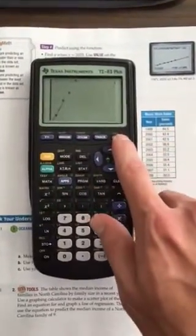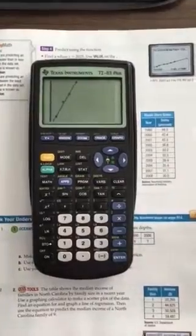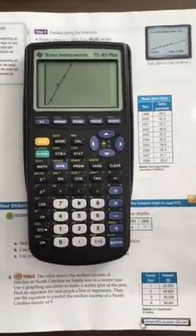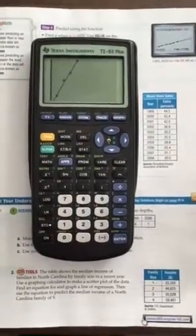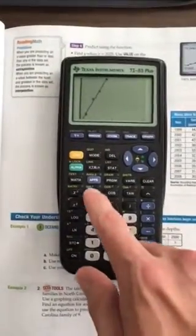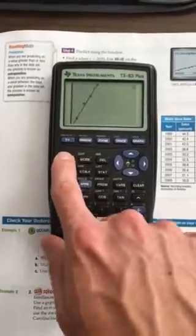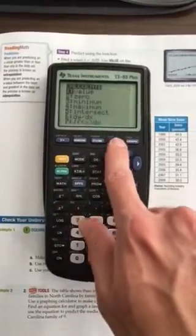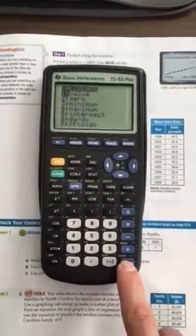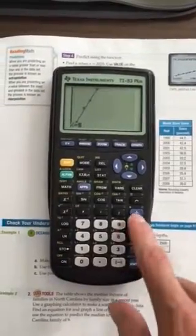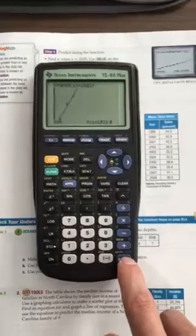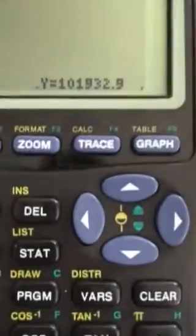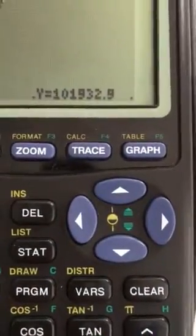Now we should be able to graph. It looks good. And all we need to do is calculate what the median income would be if the family number was 9. So we'll use calculate here, so second calculate. We want to calculate a value, so hit enter, and then we'll put in our X value, which is 9. It tells us here that our median income is $101,932.90.